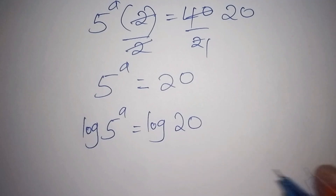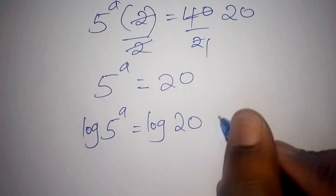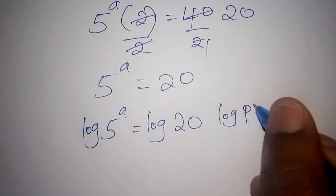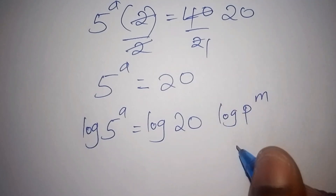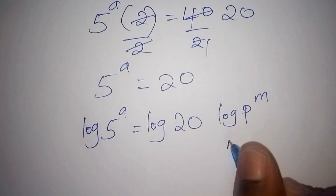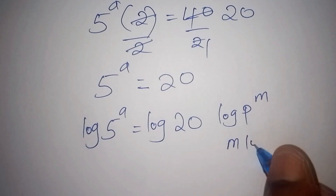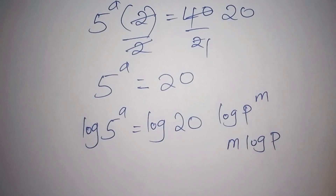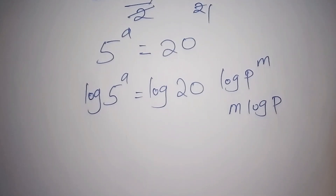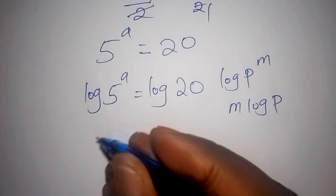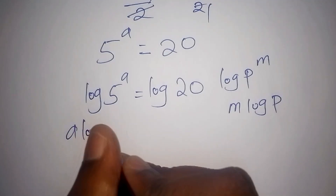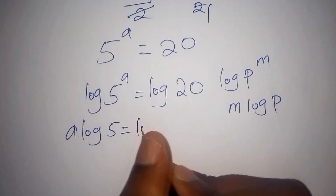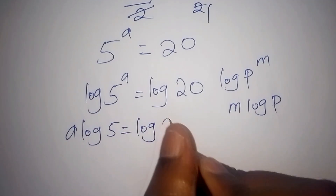We know that if we have the log of P to the power of M, this can also be written as M times the log of P. So now we shall have A·log 5 is equals to log of 20.